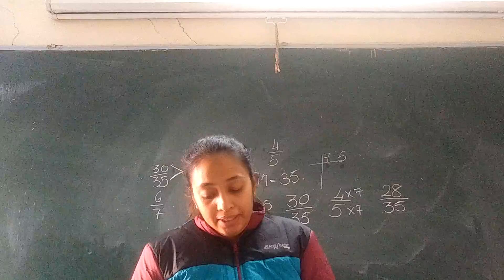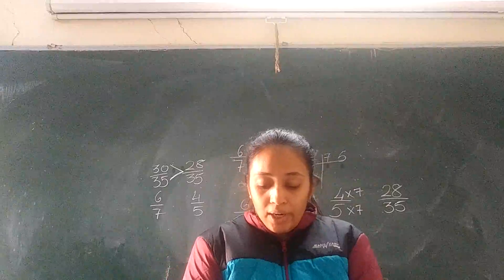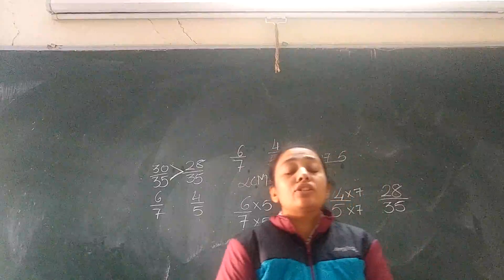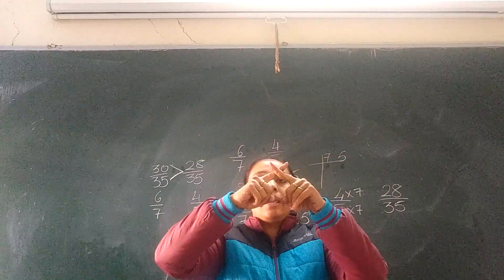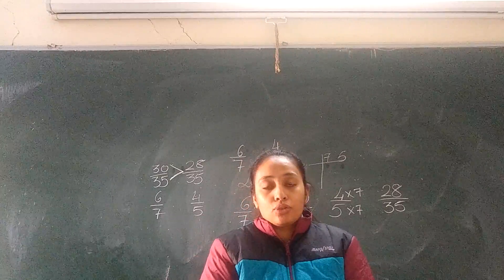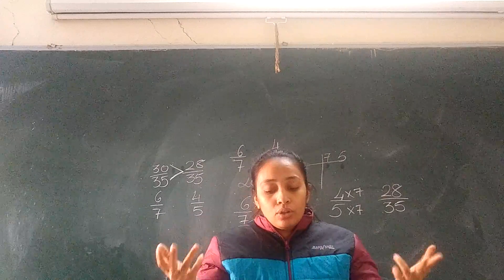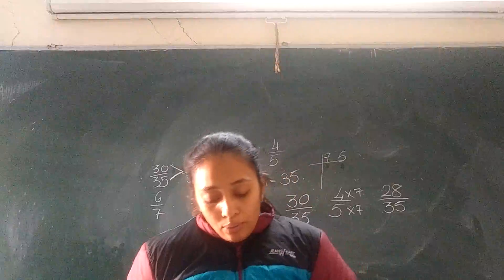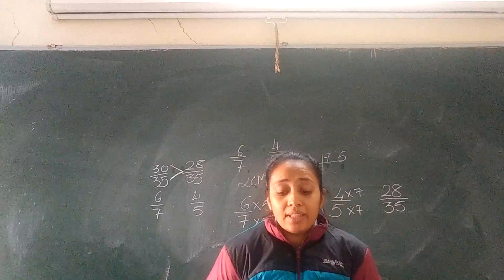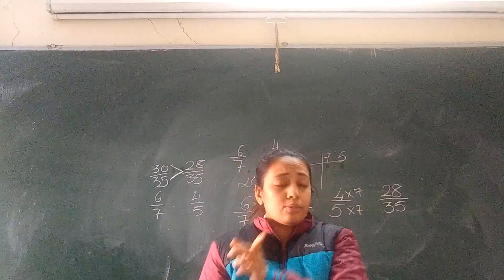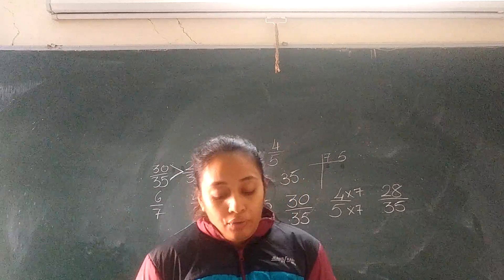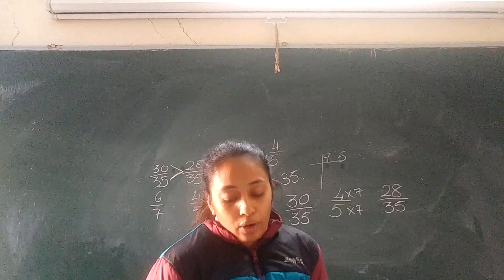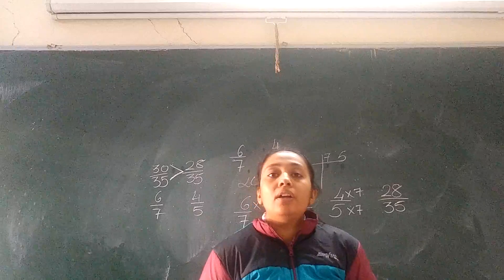There is an alternative method given here — we can compare two unlike fractions by cross-multiplying, the same way we do when checking equivalent fractions. Cross-multiply and whichever product is bigger gives you the answer. For example, compare 4 upon 9 and 5 upon 7: cross-multiplying gives 4 × 7 = 28 and 5 × 9 = 45. Since 28 is smaller than 45, 4 upon 9 is less than 5 upon 7.